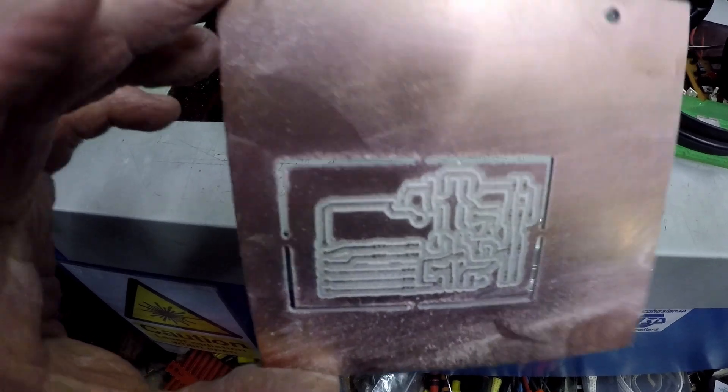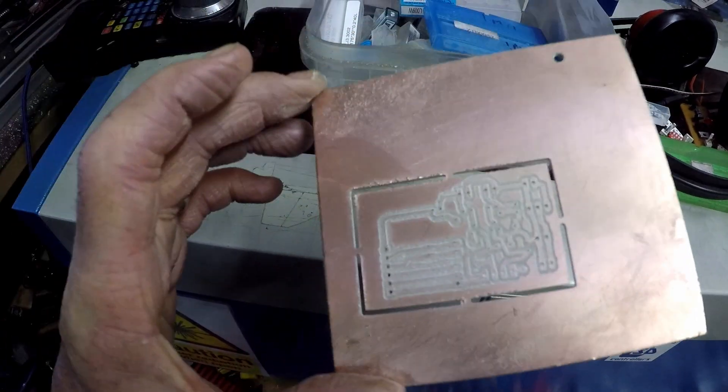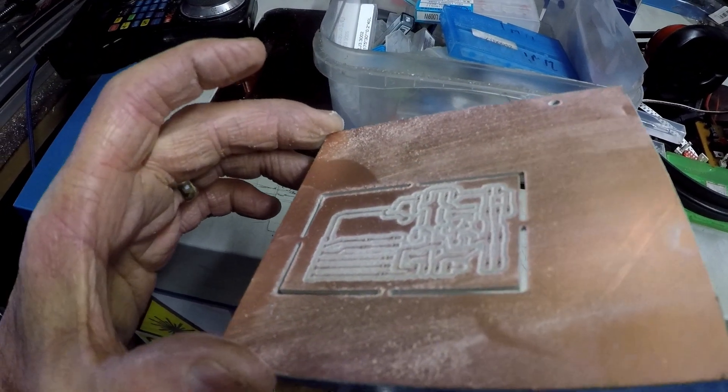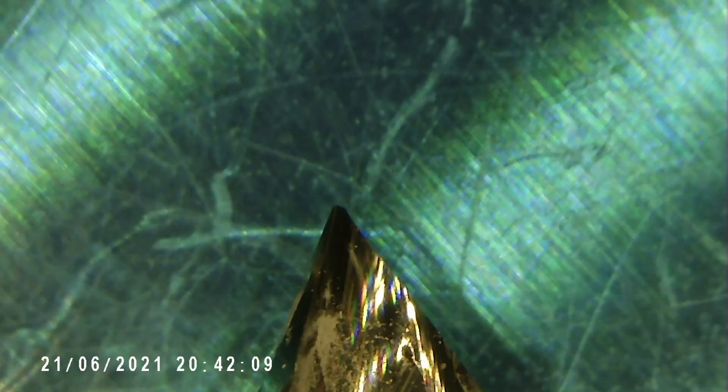The edges of the tracks are a bit rough and I usually get better results than this, not quite sure why because I did everything that I normally do. I thought I'd better double-check the milling bit and yeah, it's broken—not the sharpest tool in the box.